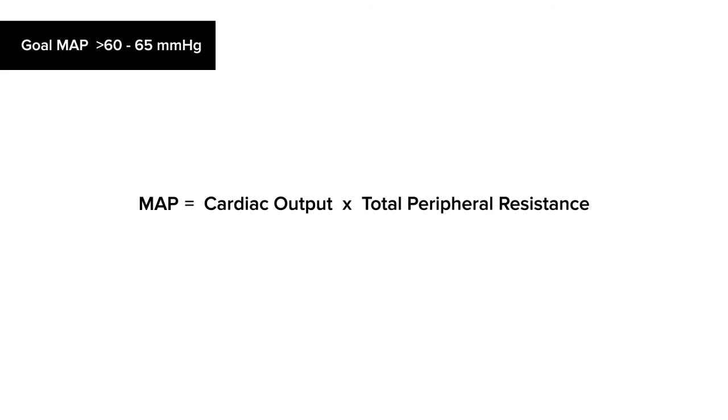Taking this just a step further, vascular resistance is not the only thing that contributes to mean arterial pressure. Cardiac output also plays a crucial role, in that mean arterial pressure is equal to cardiac output multiplied by the total peripheral resistance. So by increasing either of these, you could also increase your mean arterial pressure. This is essentially how your vasopressors and inotropes will be working.